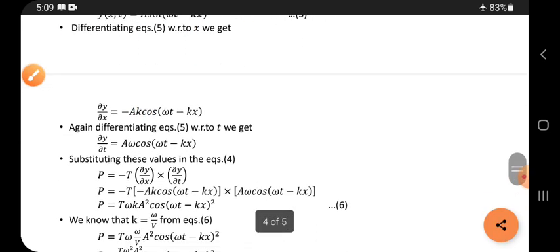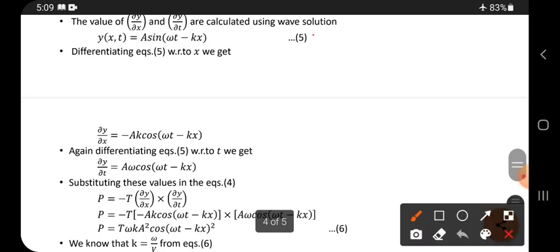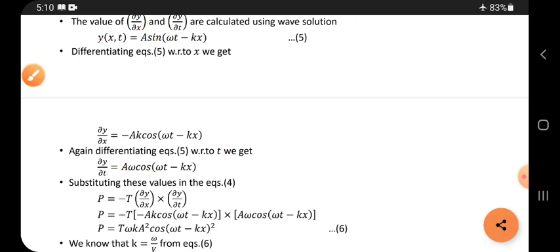Again differentiating equation 5, you have to differentiate it with respect to time now. It is ∂y/∂t. A as it is. Now sine becomes cos. With respect to t we are doing differentiation, so t multiplication gives omega, which comes outside. Minus.